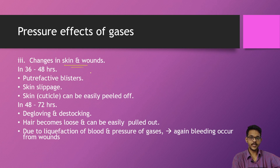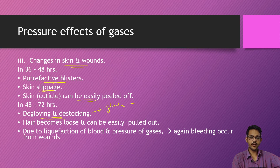Another effect of gases involves changes in the skin and wounds. If the body had any wounds before death, they change in shape and may be petrified. Blistering and skin slippage may occur — skin can be easily peeled off within 24 to 48 hours. Degloving and destocking may occur: degloving is where the epidermis of the skin around the hand comes off like a glove, and destocking is where the skin around the legs becomes loose and can be easily pulled out, due to liquefaction of blood and pressure of gases. Bleeding may also occur again from antemortem wounds.